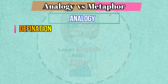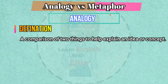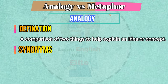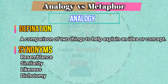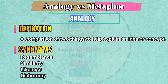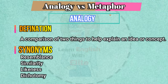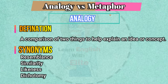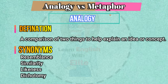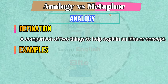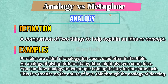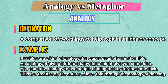Analogy. The definition of analogy is a comparison of two things to help explain an idea or concept. The synonyms of analogy are: resemblance, similarity, likeness, dichotomy. Now let me show the example of the word analogy in a sentence: Parables are a kind of analogy that Jesus used often in the Bible.